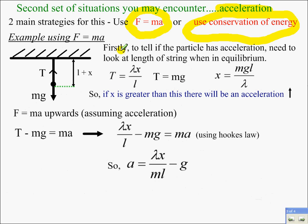First part is you need to determine if a particle has acceleration. So you're going to need to look at the length of a string when the particle is hanging in equilibrium. So T equals lambda x over l and T equals mg. Use those to get an expression for x.